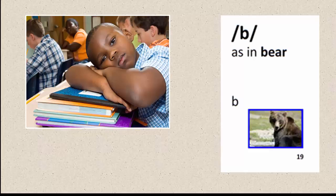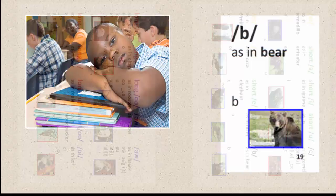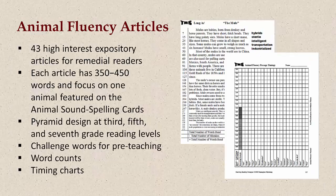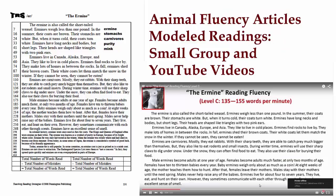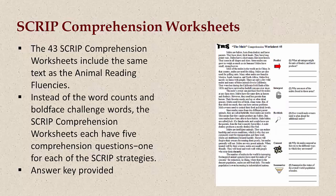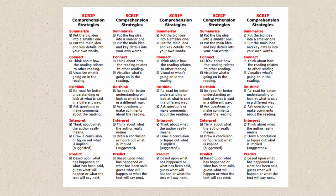Unlike many phonics programs, the beginning sound of the animal name perfectly matches the sound listed on each card. For example, the bear card represents the /b/ sound. Students will love the common and uncommon animals pictured on these cards. Each animal has a corresponding fluency and reading comprehension article describing the animal's physical characteristics, habitat, diet, family, interesting facts, and the status of the species — whether endangered or not.